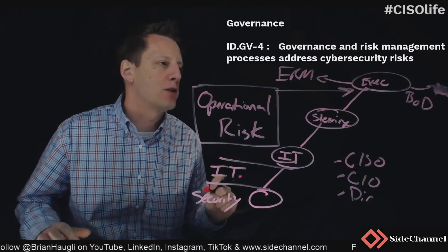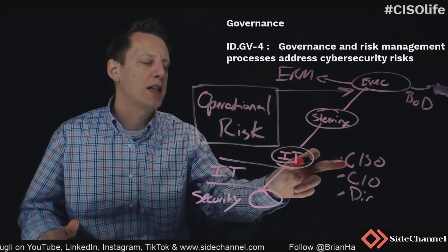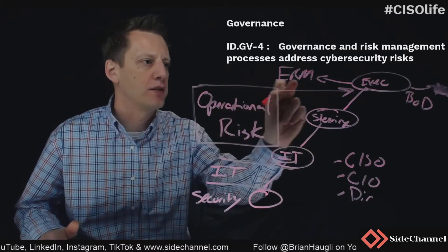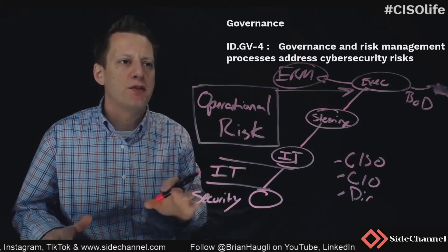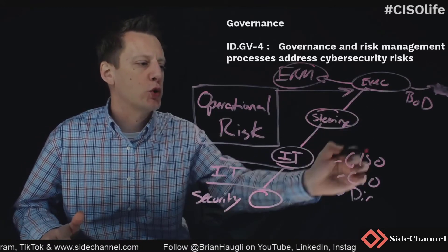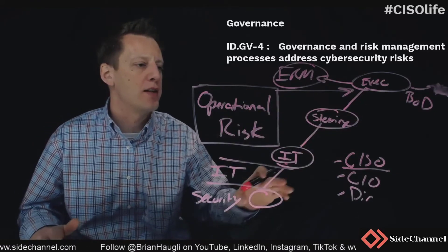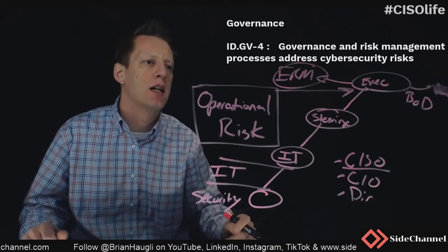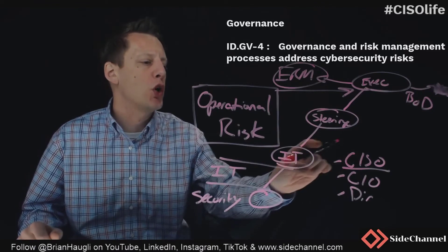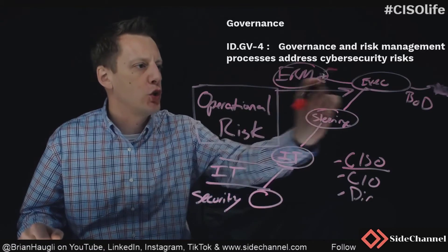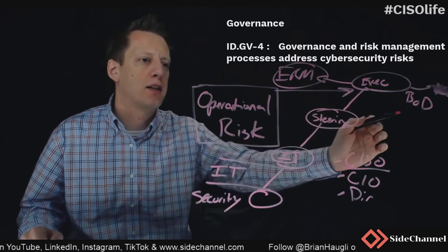It then falls to this person to articulate that these risks need to be treated as an operational risk in the overarching enterprise risk management for the organization. If the organization created this role and then had no interaction whatsoever, that is not an effective governance structure. If this person is unable to show that cybersecurity is an operational risk and transparently convey that to executive leadership and the board, then this person is not right for that role.